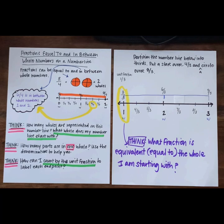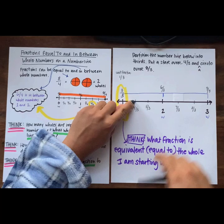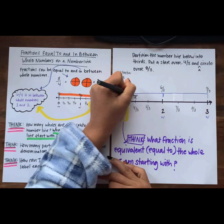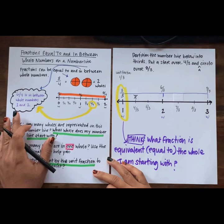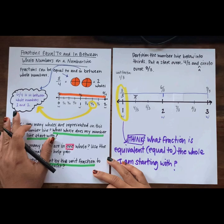How can we find four-thirds on our number line? Say your answer out loud. That's right — we could start at three-thirds and count up one-third, or we could start at six-thirds and count back to four-thirds. Where could we find eight-thirds on our number line? That's right — we could start at six-thirds and count up to eight-thirds, or start at nine-thirds and count back to eight-thirds.